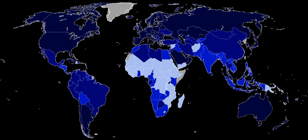In its 2010 Human Development Report, the UNDP began using a new method of calculating the HDI. The following three indices are used: 1. Life Expectancy Index (LE) = (LE − 20) / (85 − 20), which equals 1 when life expectancy at birth is 85 and 0 when life expectancy at birth is 20. 2. Education Index A = (MYSI + EYSI) / 2.